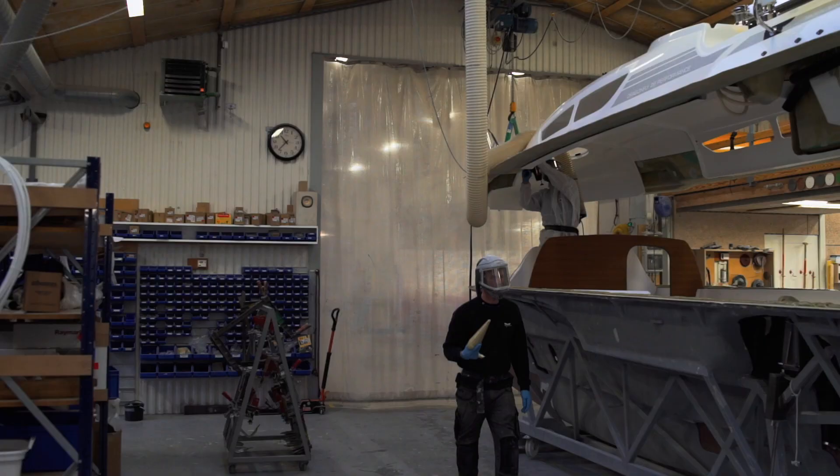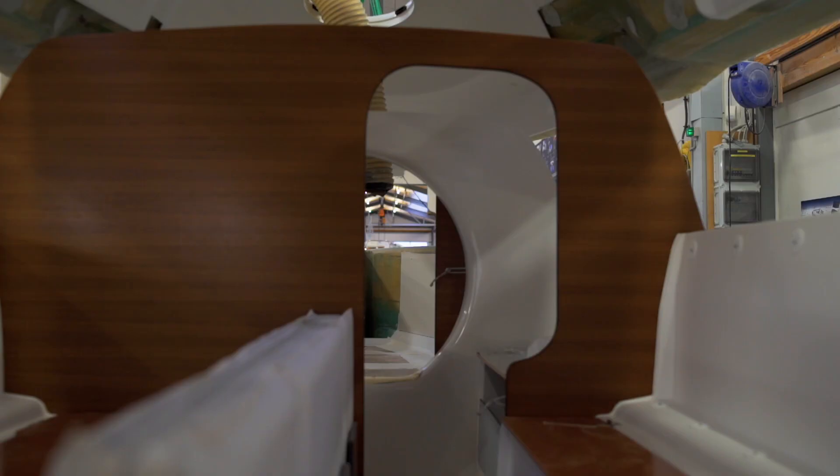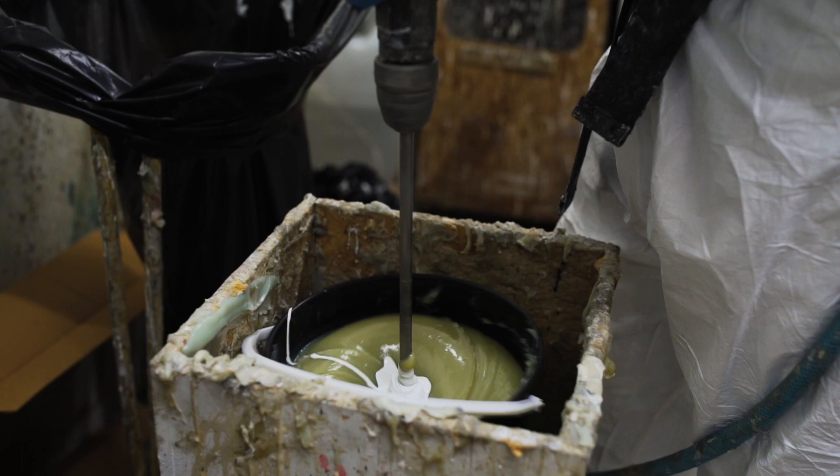As you can see, the hull is placed in a cradle to maintain the right shape during the assembly. Before gluing, the boat builders do several test fittings between deck and hull to make sure everything fits.